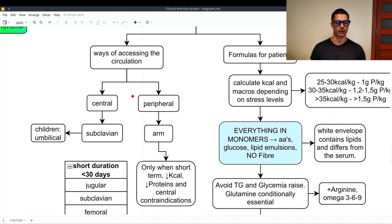So, we have two ways of accessing the circulation. The central way, using the subclavian. So, right here. And in children is used the umbilical. And the peripheral way of accessing the circulation is using the arm.